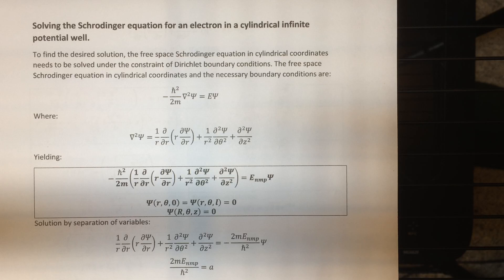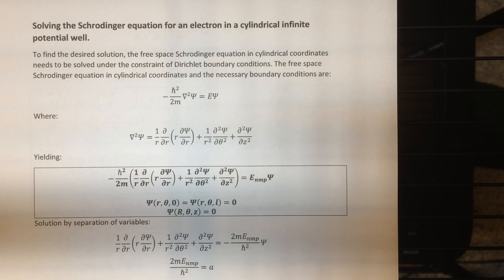We know that if there is only one region where the potential is zero and it's infinite everywhere else, the electron is going to be totally confined in that region. Therefore, the wave function has to be zero everywhere where the potential is infinite, and it can be non-zero where it's zero inside the cavity. We also know that it must be continuous, so it must go to zero at the boundaries.